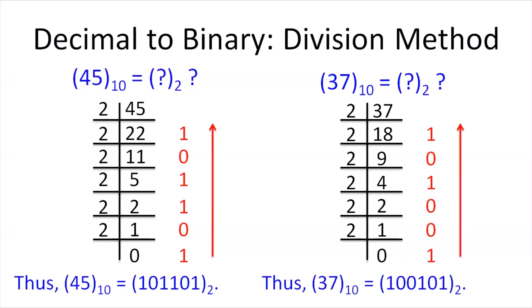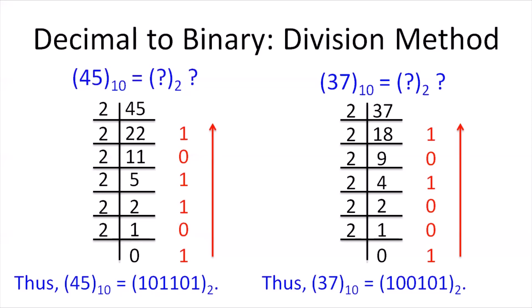Now, let's see how we can convert a fractional decimal number to its binary equivalent. If a decimal number has a fractional part, that is something after the decimal point, the integral part, that is the part before the decimal point, is treated in the exact same way that we discussed earlier.